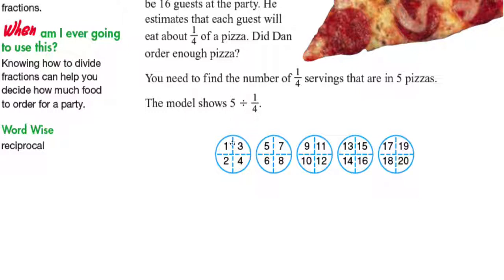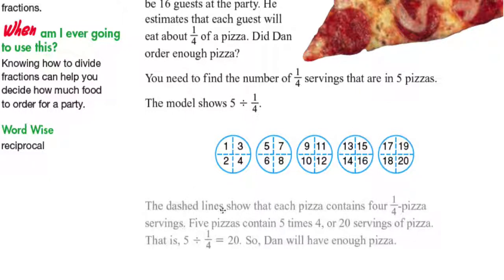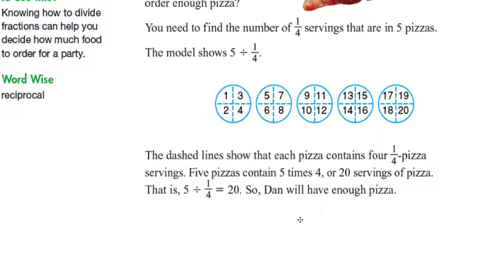If you notice, how many fourths are there in those five pizzas? There are 20 fourths in those five pizzas. The dashed line shows that each pizza contains four one-fourth pizza servings. Five pizzas contains five times four, or 20 servings of pizza. That is five divided by one-fourth equals 20. So Dan will have enough pizza for his party. We notice that five divided by one-fourth is 20, which is the same as five times four equals 20.